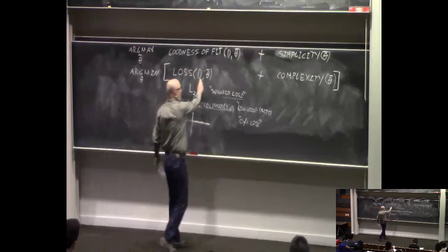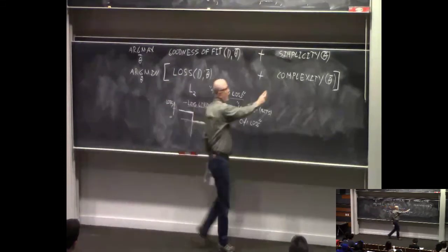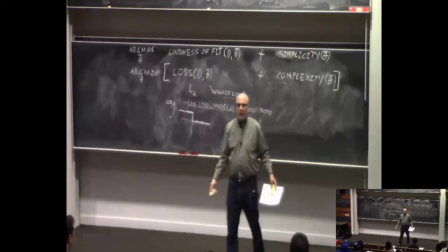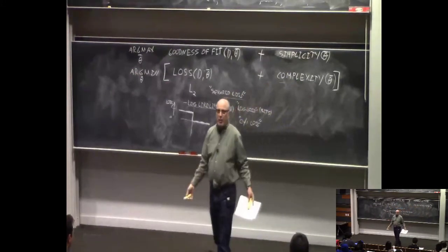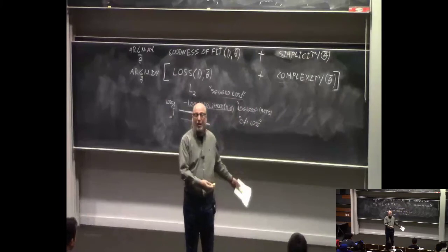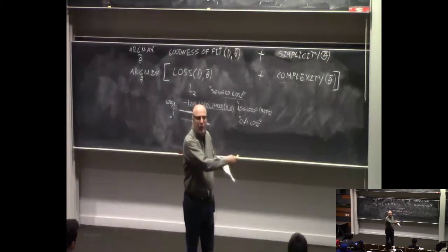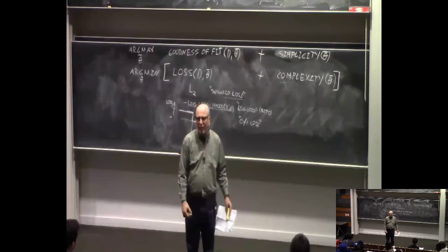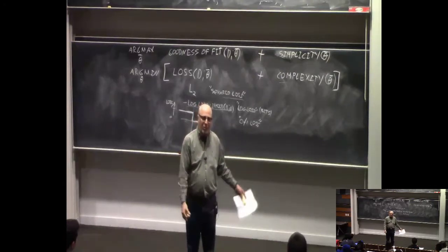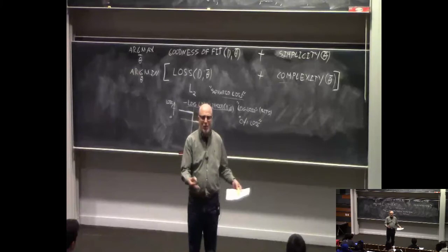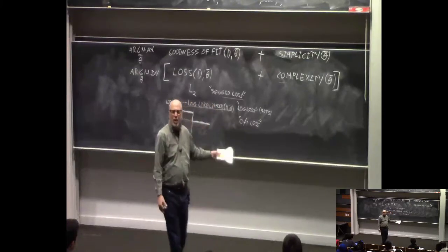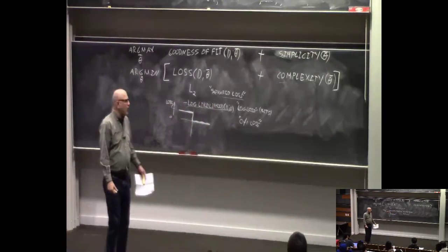You need to ask the question for the loss and for the regularizer. For you to be able to find the global minimum, you typically need to be able to find the global minimum of each component. They both need to be easy to work with. There might be crazy cases where neither is easy individually but together they are, but in general you need both to be reasonable to work with.